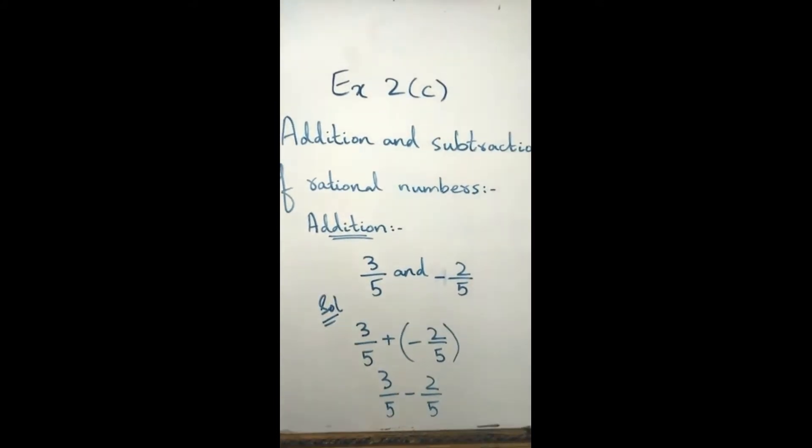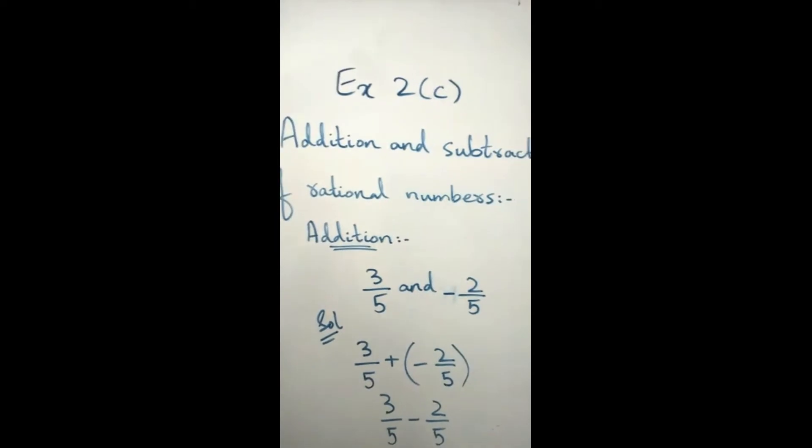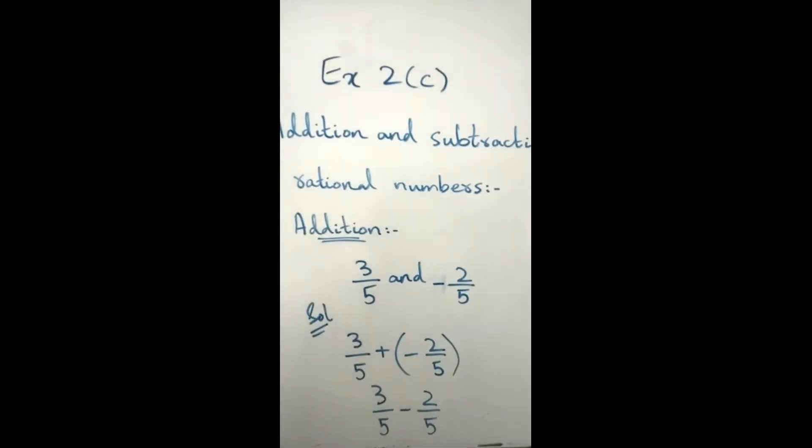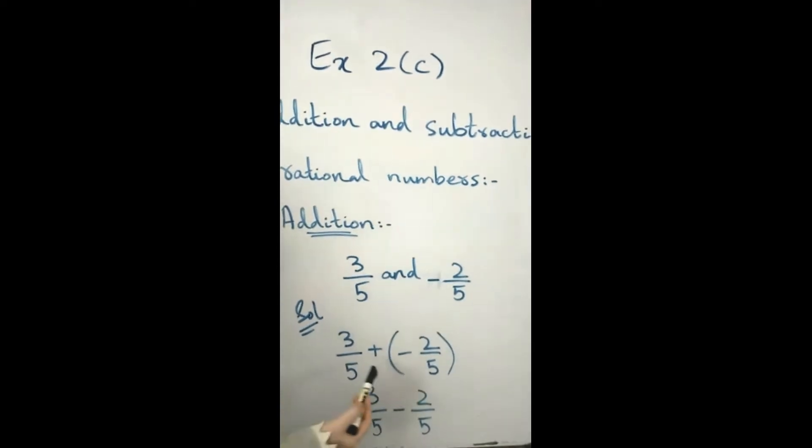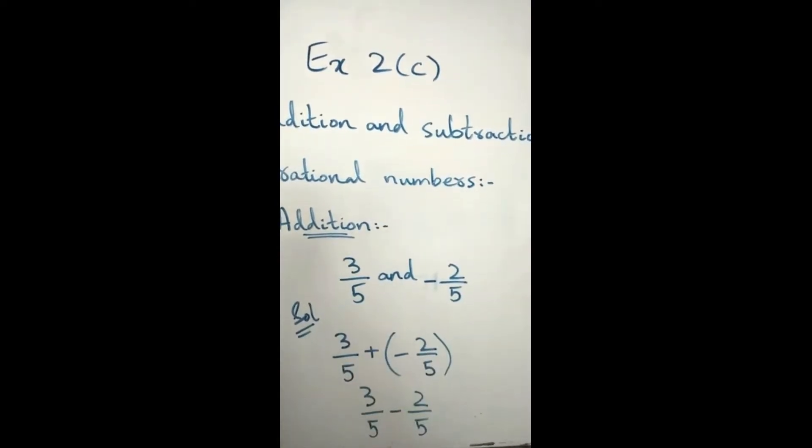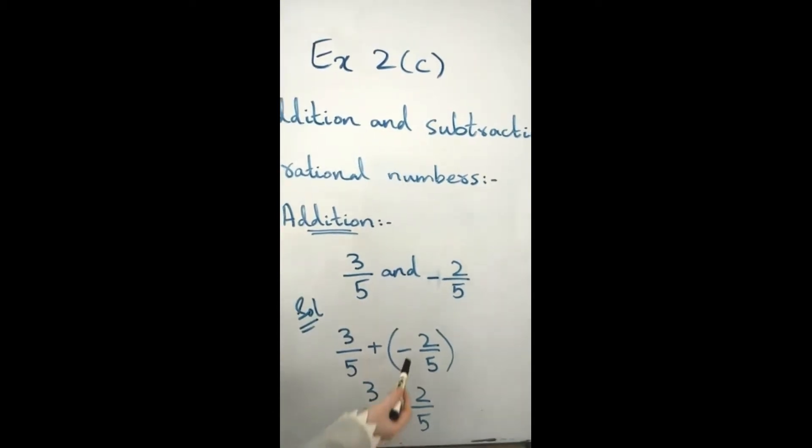First, we come to the topic of addition of rational numbers. We have one example here: 3/5 and -2/5. I will write 3/5 plus, placing brackets around -2/5 because of the negative sign.